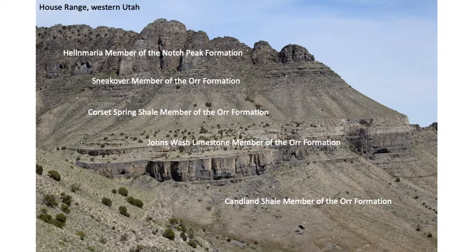There are limestones interbedded with both the Kanland and the Corset Spring. The speaker worked on these rocks for their dissertation. The shales show up as recessive or slope-forming units while the limestones are cliff-formers. This is all Upper Cambrian in age — rocks deposited during the Late Cambrian are Upper Cambrian rocks.